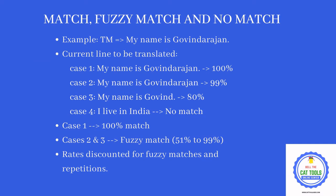What is a match, a fuzzy match, and a no match? Let's say 'My name is Govindarajan' is saved in the translation memory. If I want to translate that same sentence now, it will be compared with the TM segment and I will get a 100% match, and it will be automatically substituted by OmegaT. In case two, if I translate 'My name is Govindarajan' without a full stop, that will be a 99% match.